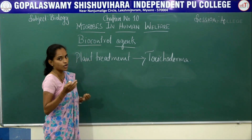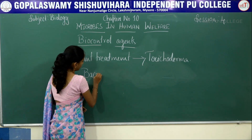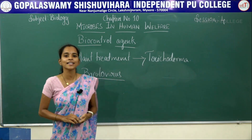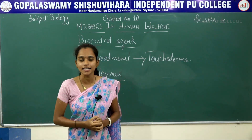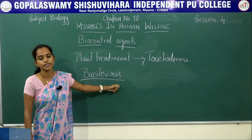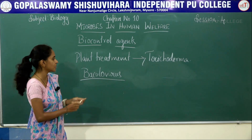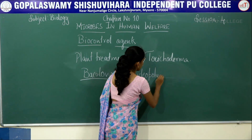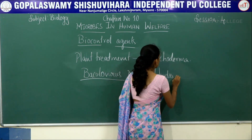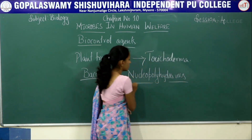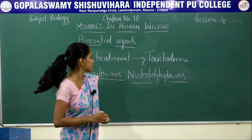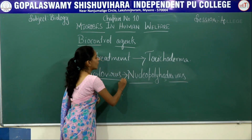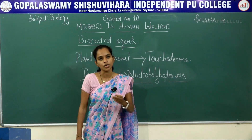The third biocontrol agent is baculovirus. This has its effect on arthropods, especially insects. The example for this type of baculovirus is Nucleopolyhedrovirus. This is the type of baculovirus which shows its effects on arthropods or insects.